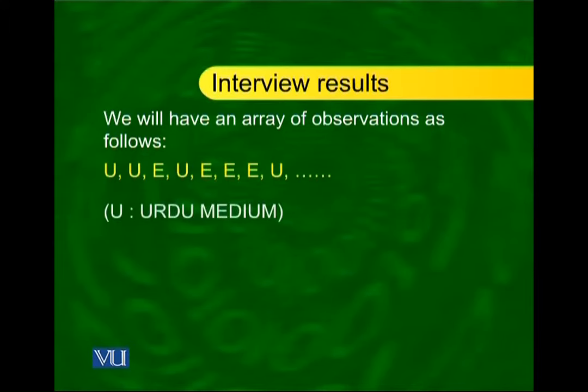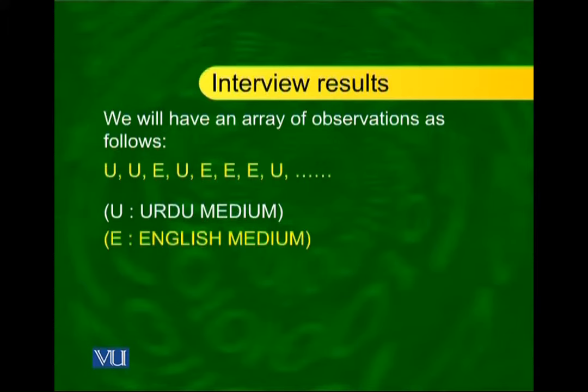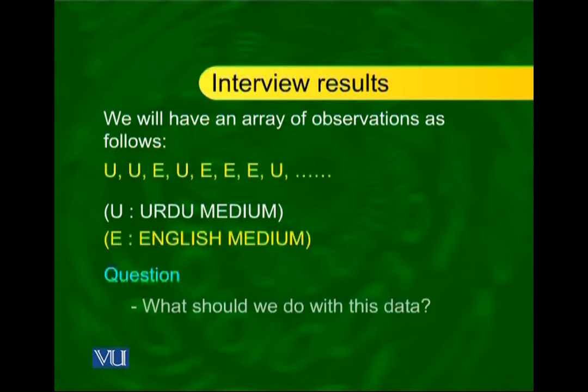We will have a set of observations like Urdu, Urdu, English, Urdu, English, English. So the question is, what should we do with this data? Obviously, the first thing that comes to mind is to count the number of students who said Urdu medium and the number who said English medium. Suppose that in those 1200 students, 719 students have come from Urdu medium schools and 481 students have come from English medium schools.